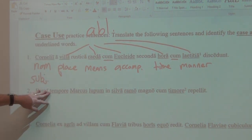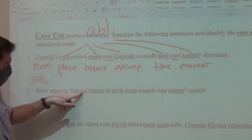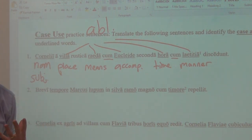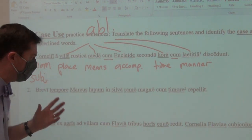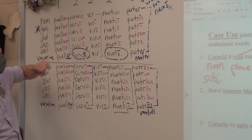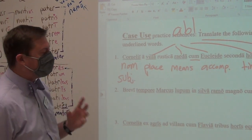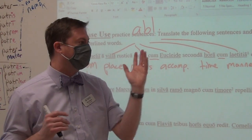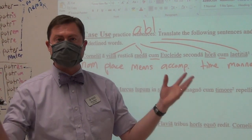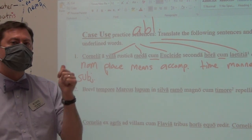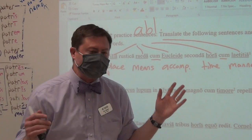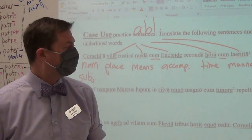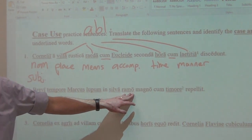Moving on to sentence number two: brevi tempore — in a short time — Marcus, he must be my subject, drives off the wolf in the forest. Now ramo is either going to be dative or ablative. When you have that option and know it by form, remember to look for what is called a ditransitive verb. Ditransitive verbs are verbs that have a direct object and an indirect object. Transitive verbs just have a direct object — he loves the copier, he sees the table, he annoys the teacher. Ditransitive verbs — give, show, speak, and tell are four great examples — have both a direct object and an indirect object. This is not a ditransitive verb, so most likely it is not going to be a dative.